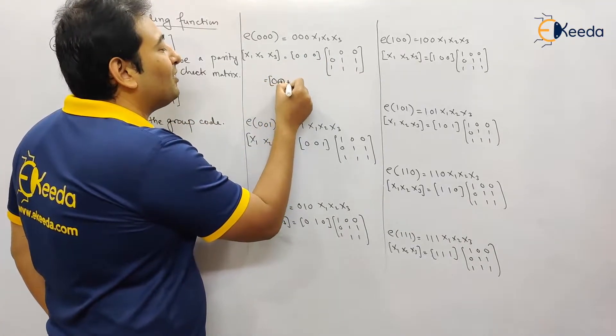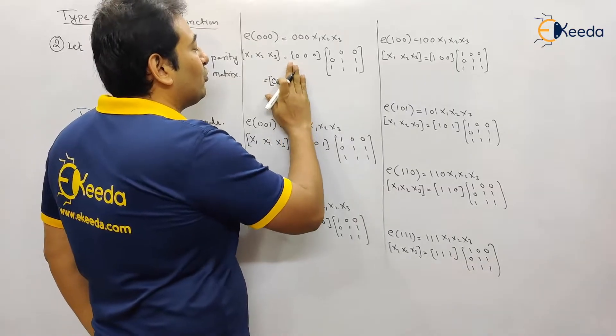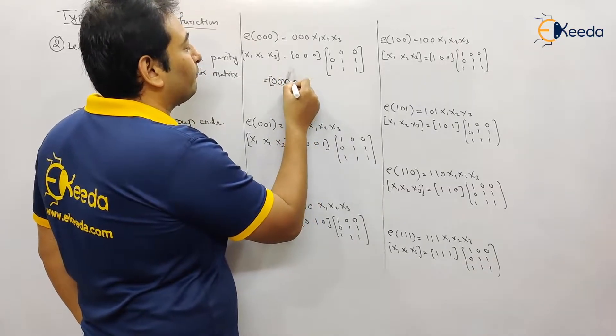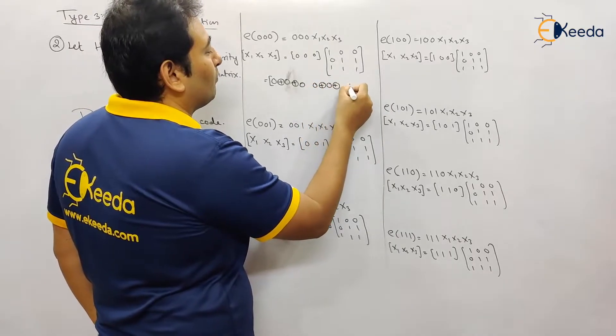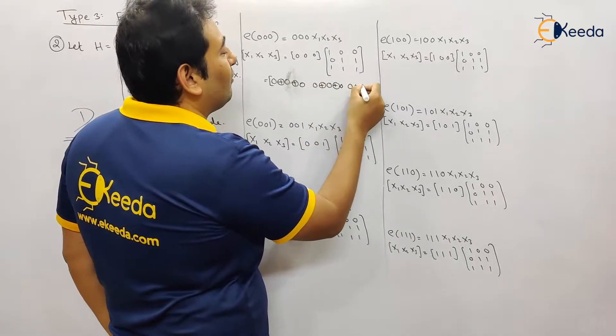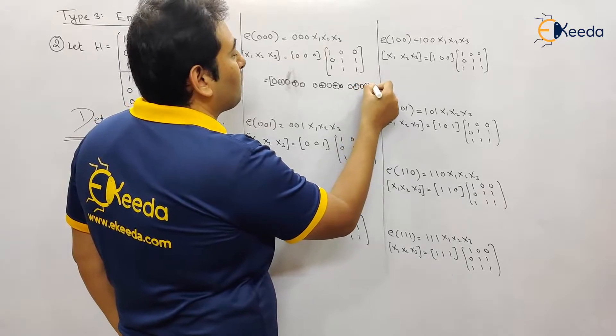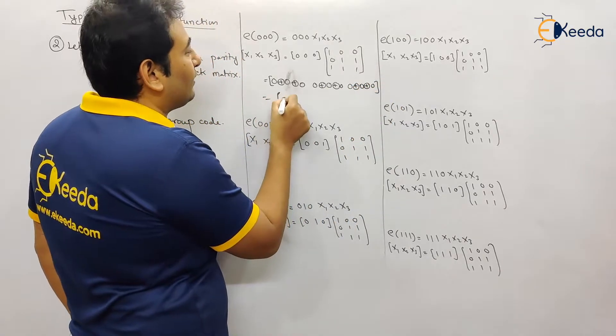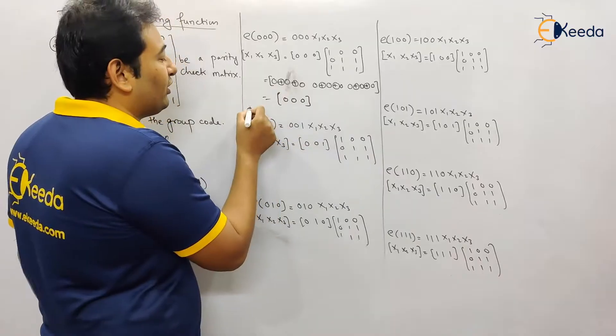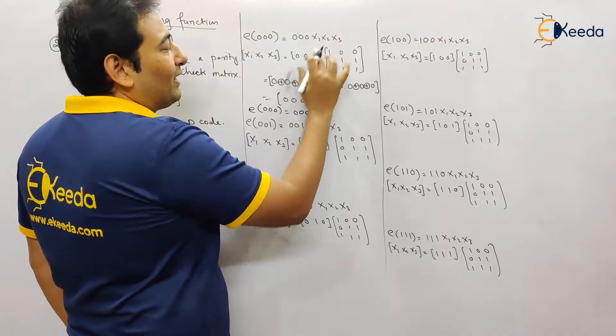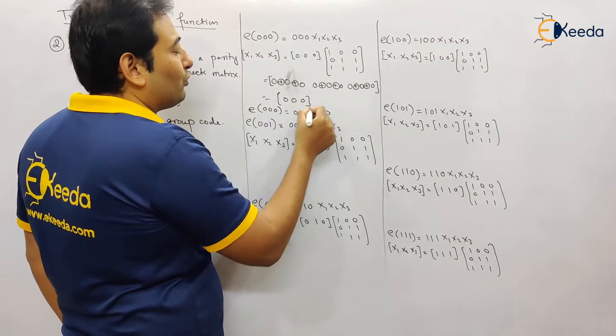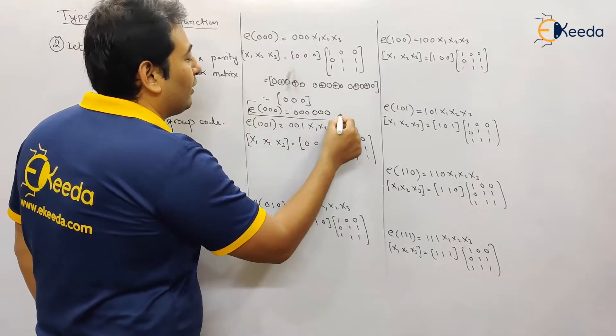Which is equal to, now see it's very simple: if you multiply anything with the 0 0 0, obviously it will be all 0, no need to check. So everything will be 0. Or you can simply write it down as 0 0 and 0. So what is the code for e triple 0? Triple 0 along with x1 x2 x3, that values are also 0. So this is the code for e triple 0.